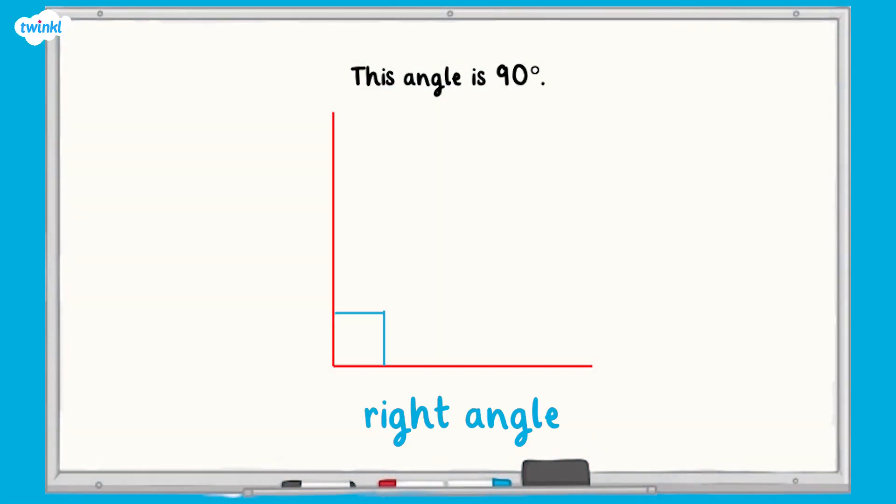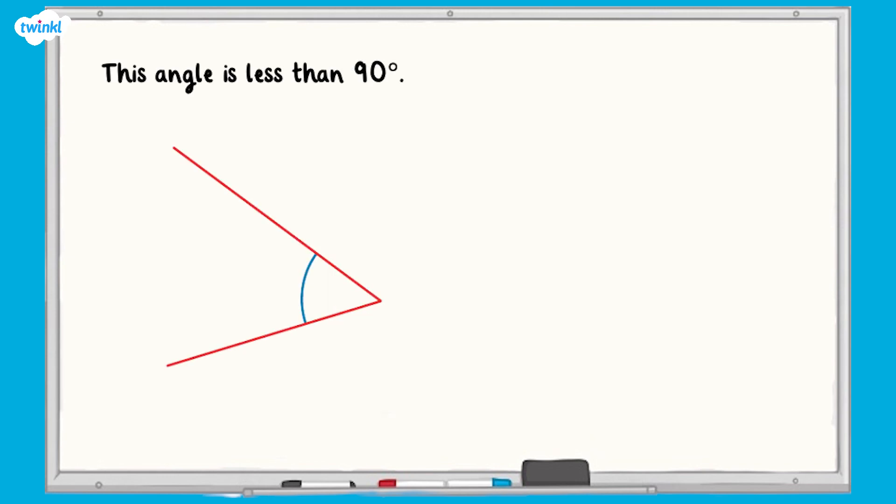This angle is a right angle. It's worth 90 degrees. This angle is less than 90 degrees. It is an acute angle.